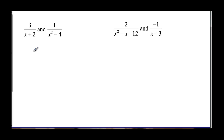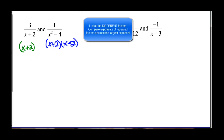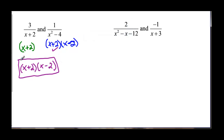What do we do when we've got expressions? We just factor. So we have x plus 2 in the first denominator, and over here we factor to get x plus 2 and x minus 2. I just need all the different factors to make my denominators look the same. I have x plus 2, and the second fraction already has x plus 2 with the same exponent, so I don't need a second one. Then I need x minus 2 because that's a different factor. So x plus 2, x minus 2 is my least common denominator.